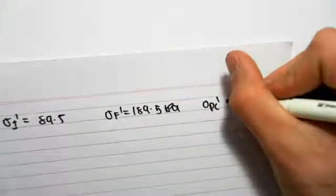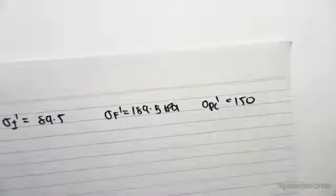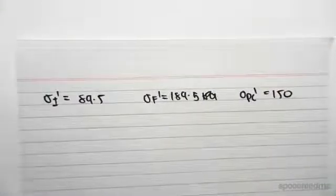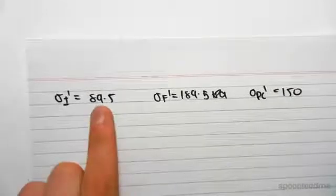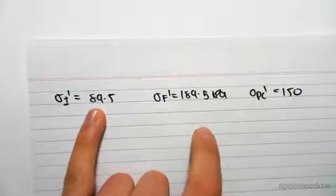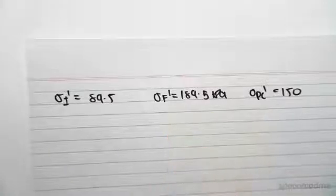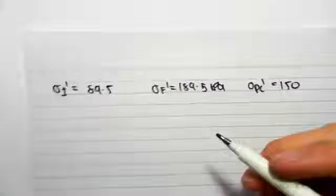So 150, and once again we need to use that information to know whether we're over-consolidated, normally consolidated, or both. In our case, we're actually both because it goes from 89.5 to 150 and then from 150 to 189.5. So our graph would look something like this.